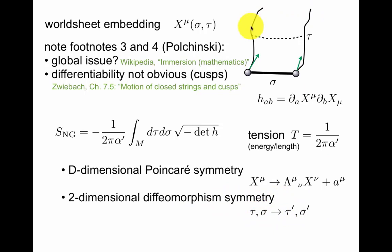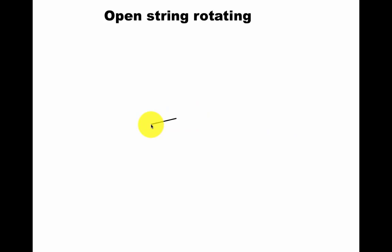So this is the two-dimensional diffeomorphism symmetry, that you can change coordinates on the world sheet. Tau and sigma could go to tau prime and sigma prime. This is an invariance of this action. This is manifest here, because this is an area, and the area doesn't change under the relabeling of coordinates.